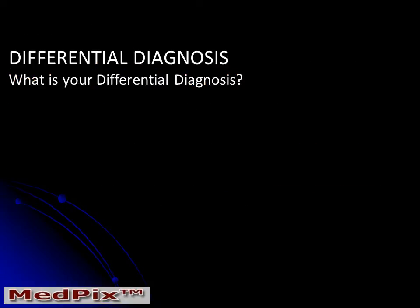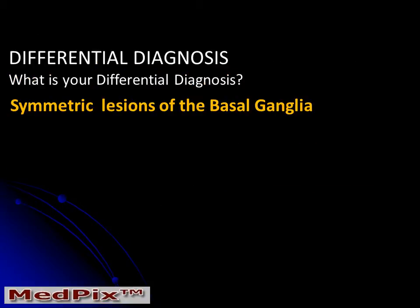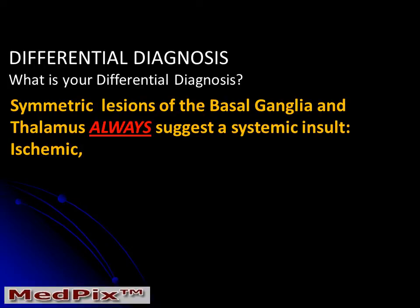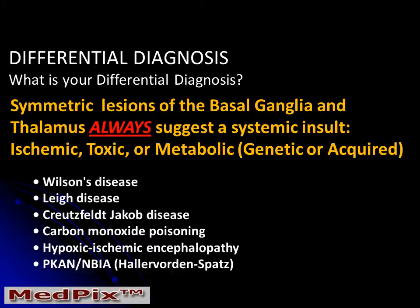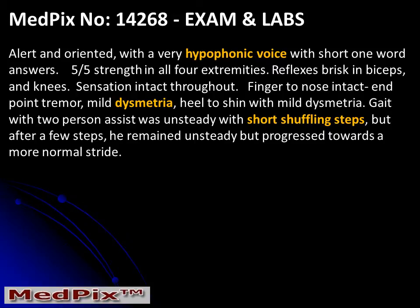What is your differential diagnosis? Symmetric lesions of the basal ganglia and thalamus always suggest a systemic insult, which may be ischemic, toxic, or metabolic — either genetic or acquired. The differential diagnostic list in this patient is long, but includes Wilson's disease, Leigh's disease, carbon monoxide intoxication, and PKAN, or Hallervorden-Spatz disease.